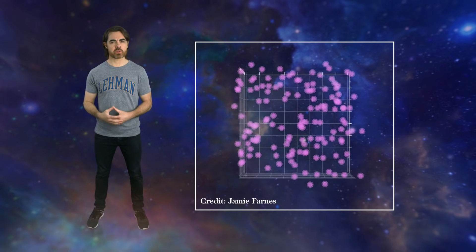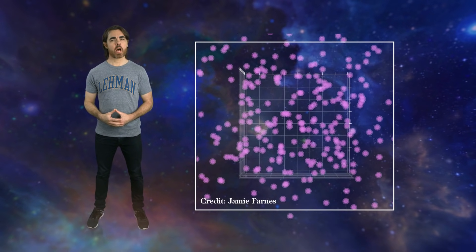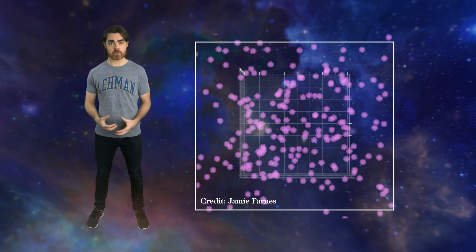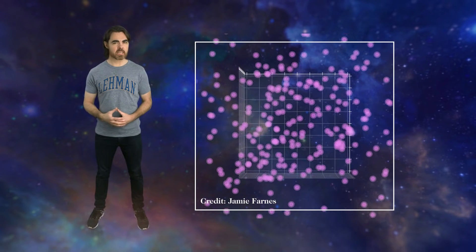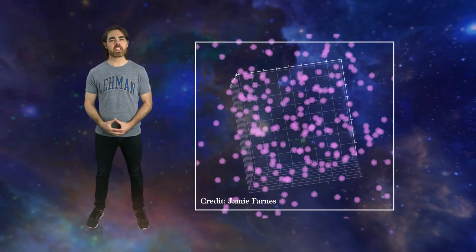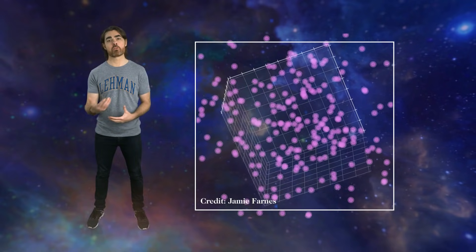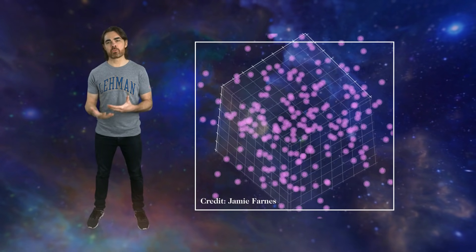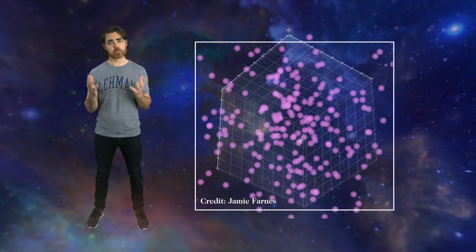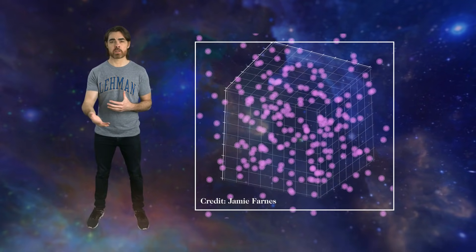To make the same negative mass stuff also emulate dark energy requires an extra gigantic assumption. The problem is that our negative masses will dilute away as the universe expands. To fix this, Farnes proposes that these negative masses are constantly created as the universe expands. That keeps the density of negative masses constant even as the density of positive masses falls.